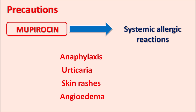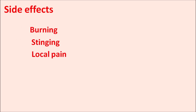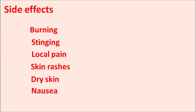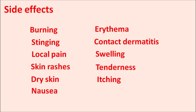Mupirocin can induce systemic allergic reactions; anaphylaxis is one important reaction, and it can also produce urticaria, skin rashes, and angioedema. Any swelling, skin rashes, or erythema observed should be taken seriously. The main side effects are related to skin irritation: burning, stinging, local pain, skin rashes, dry skin, and nausea.